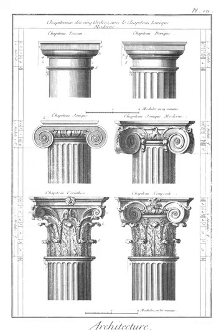Flushwork: the decorative combination on the same flat plane of flint and ashlar stone. It is characteristic of medieval buildings, most of the survivors being churches, in several areas of southern England, but especially East Anglia. If the stone projects from a flat flint wall, the term is proudwork, as the stone stands proud rather than being flush with the wall.